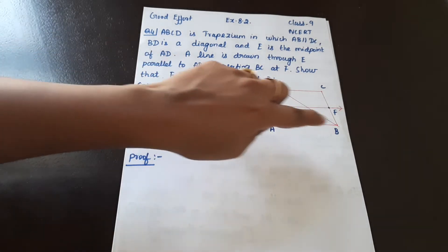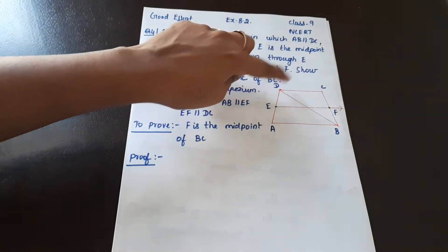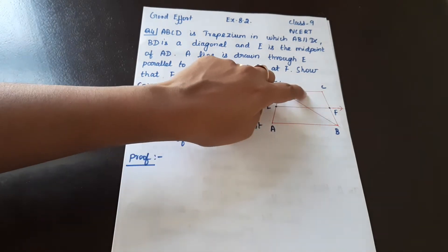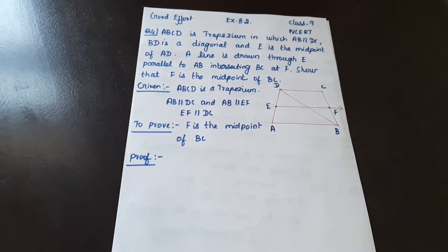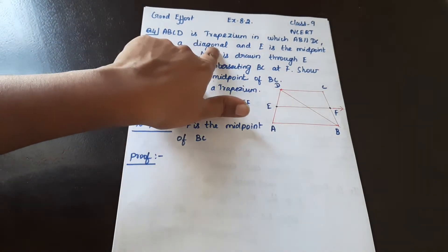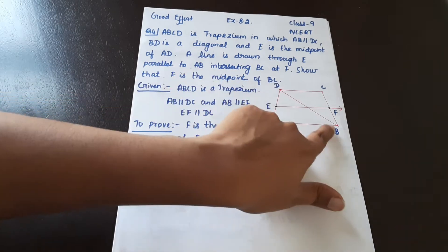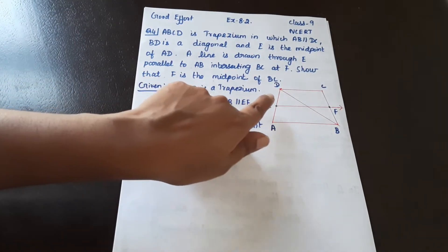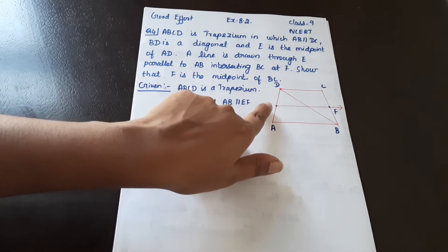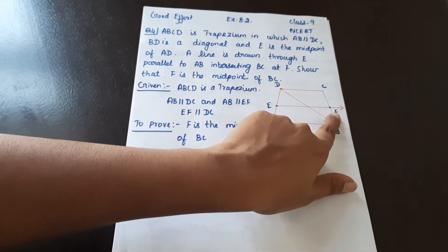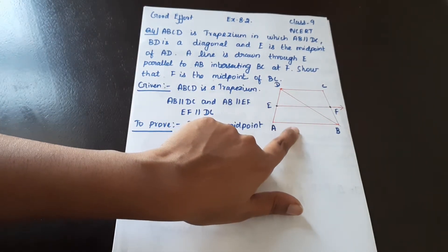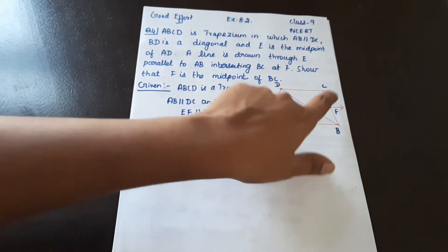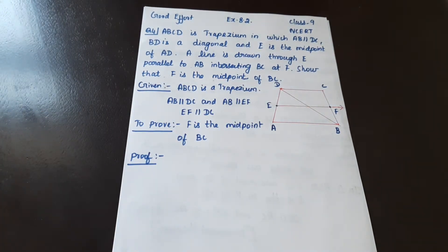ABCD is a trapezium in which AB is parallel to DC. BD is a diagonal and E is the midpoint of AD. A line is drawn through E, parallel to AB, intersecting BC at F. Show that F is the midpoint of BC.